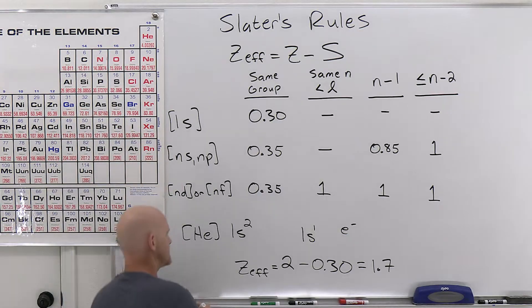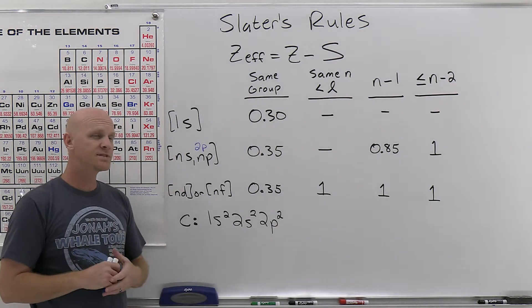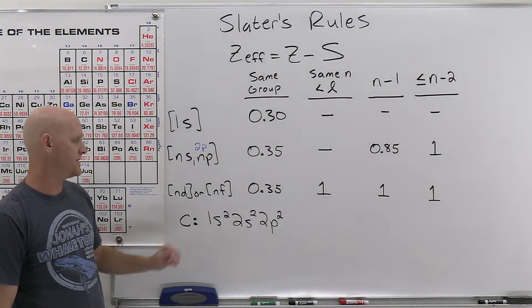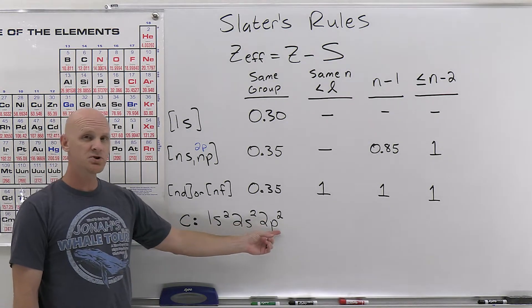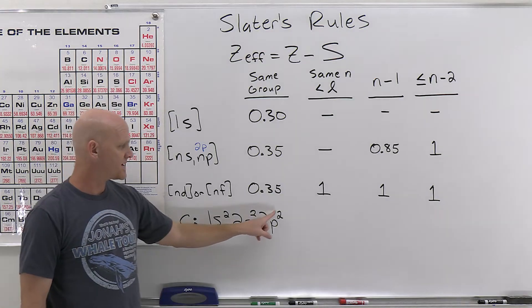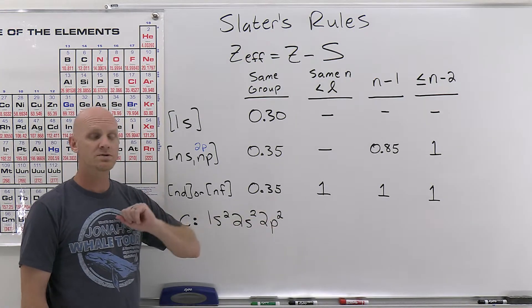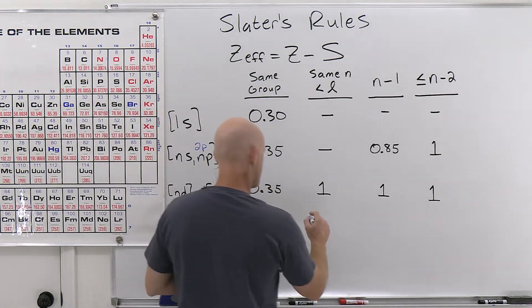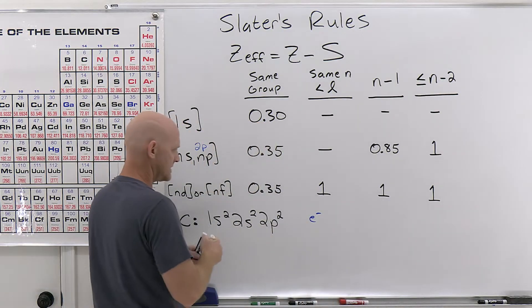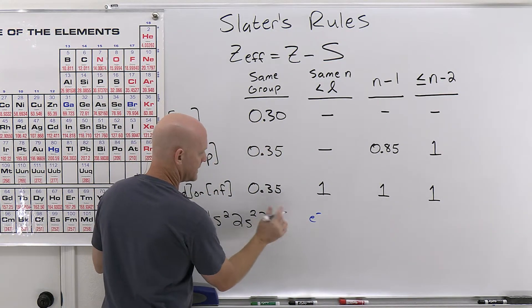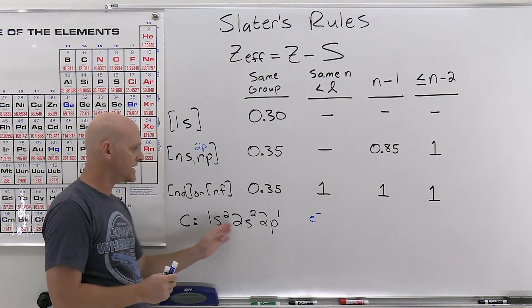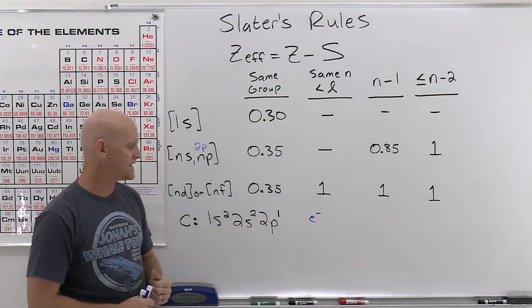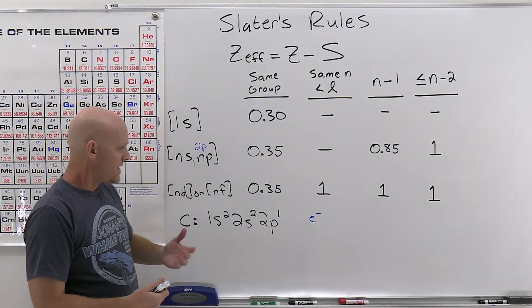So the next example I want to take a look at here is carbon. And so carbon's electron configuration, 1s2, 2s2, 2p2, and in this case, we want to examine one of the outermost electrons, one of those p electrons. So we'll pull out that electron here, and that's going to leave us with one left in that p orbital right there. And so we're going to see how all of these remaining electrons screen that one we kind of set aside, one of those p electrons.